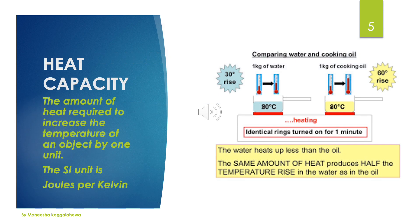Okay children, our next topic is heat capacity. I have given an example at the right side of the page. What can you see there? There are 1 kg of water and 1 kg of cooking oil. Both of them are heating for 1 minute. After that, their final temperatures are given here. The final temperature of the water is 30 degrees Celsius, and the final temperature of the cooking oil is 60 degrees Celsius.